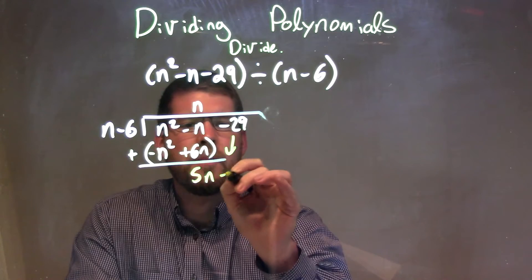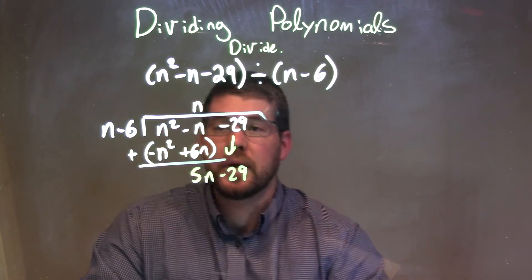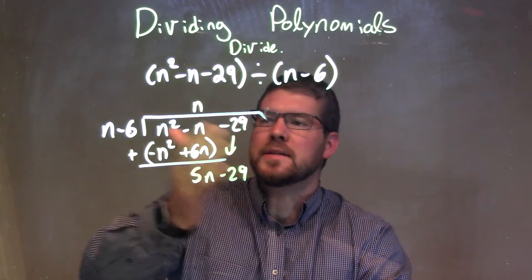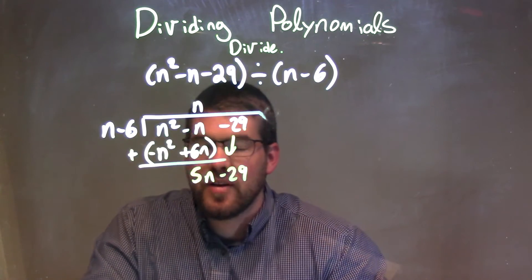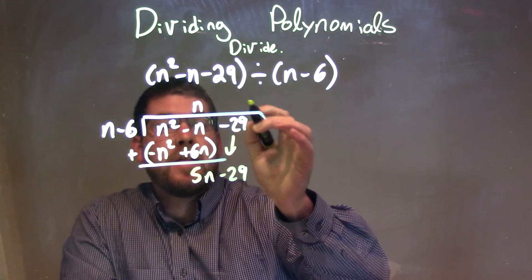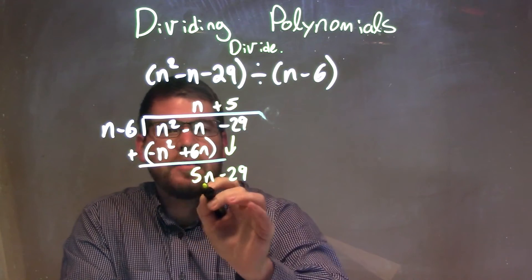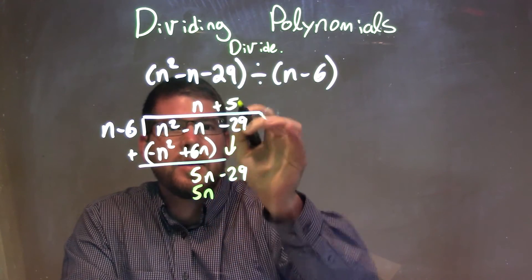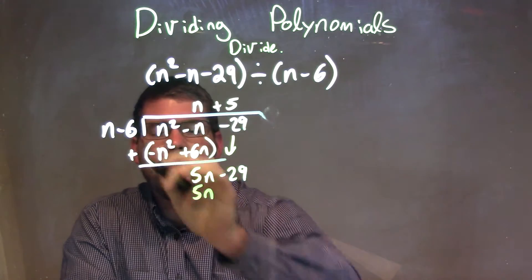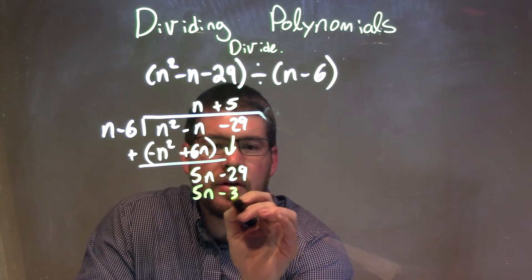We bring down our minus 29 and we do it again. We say, okay, what times n gives me 5n? Well, that's just 5, right? So we go plus 5. 5 times n gives me 5n, and then 5 times a minus 6 is minus 30.